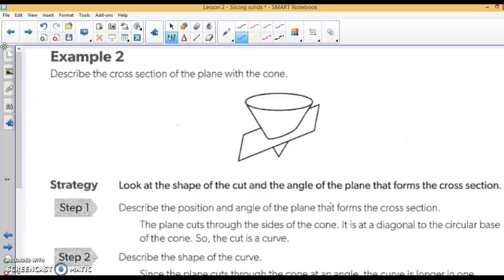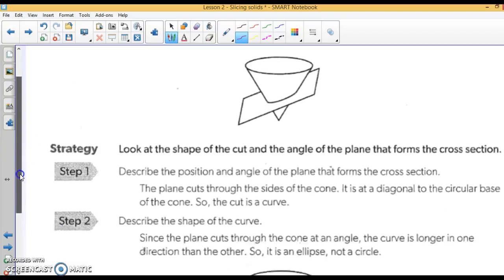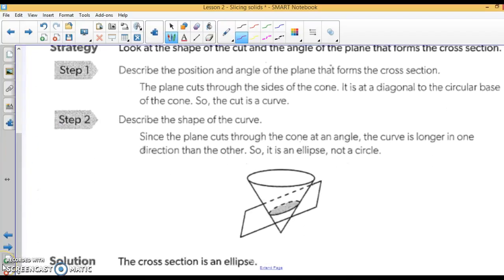The cross-section will come when it is slicing it diagonally. Right here is what the cross-section would look like. And it is an ellipse or an oval.